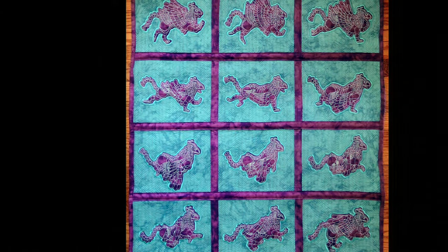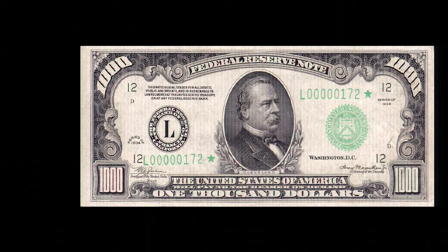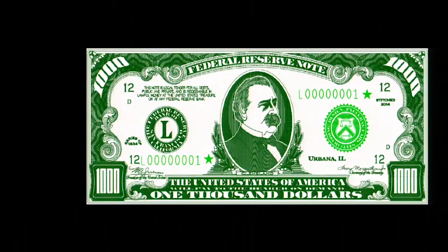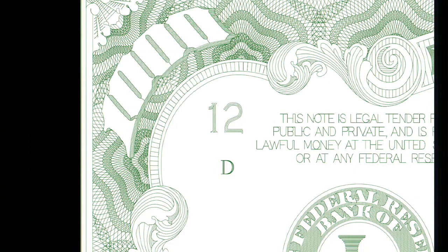Now let's look at a much more complicated design. This is a $1,000 bill — a scan of a 1934 $1,000 bill. This is Nina's expert line art rendering of it. In this image, there are no fills, no polygons — there's just lines. We can see that in the close-up: it's just a whole bunch of little lines.